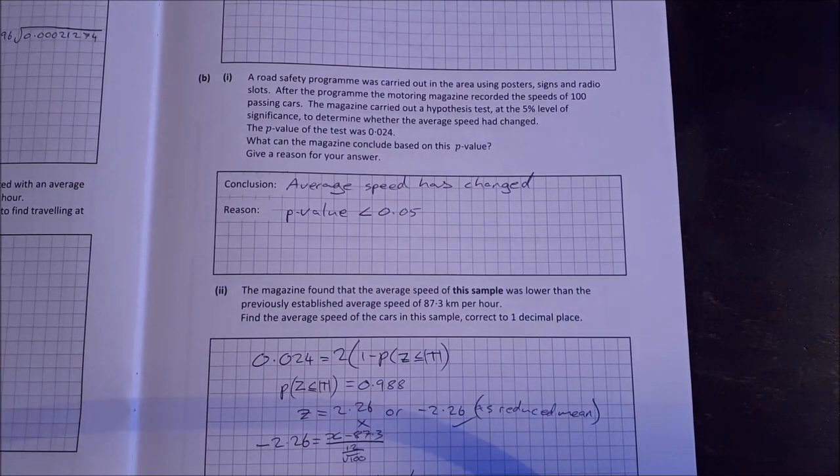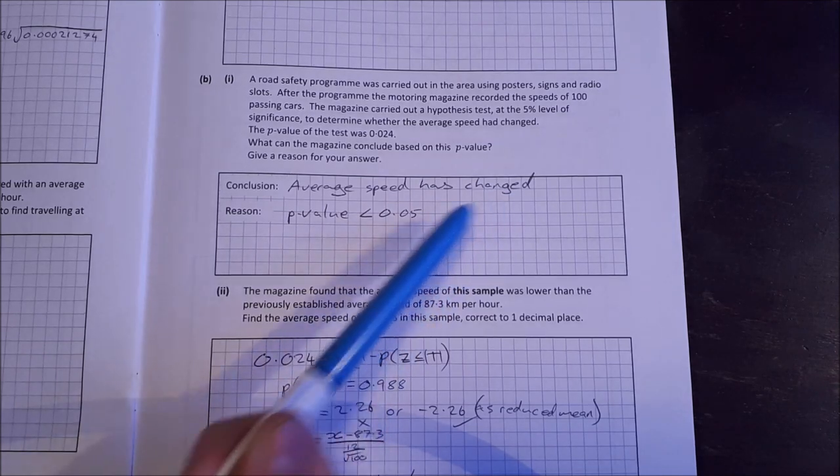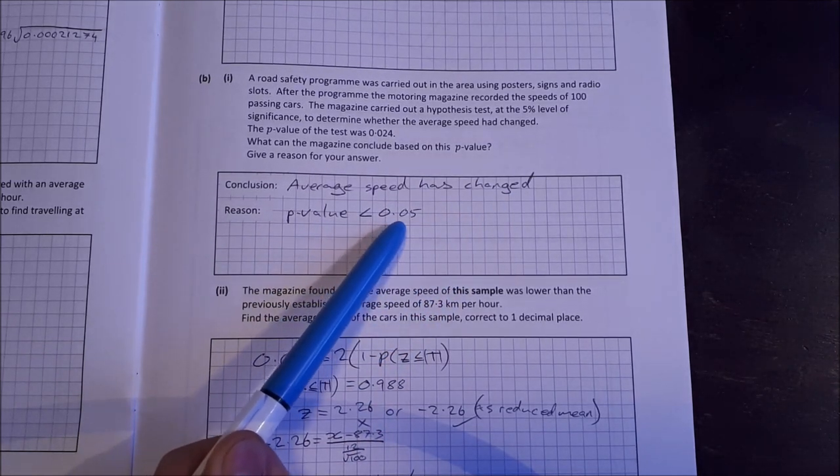Part B. A road safety program was carried out in the area using posters, signs and radio slots. After the program, the motoring magazine recorded the speeds of 100 passing cars. The magazine carried out a hypothesis test at the 5% level of significance to determine whether the average speed had changed. The p-value of the test was 0.024. What can the magazine conclude based on this p-value? Give a reason for your answer. The conclusion is that the average speed has changed because the p-value is less than 0.05.